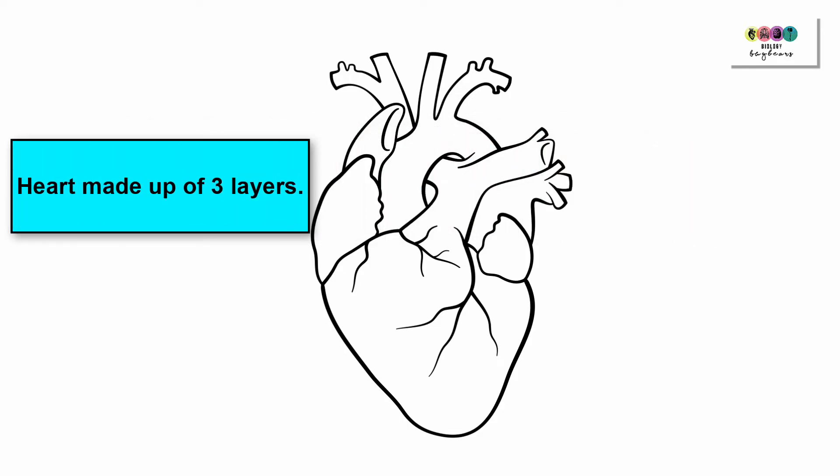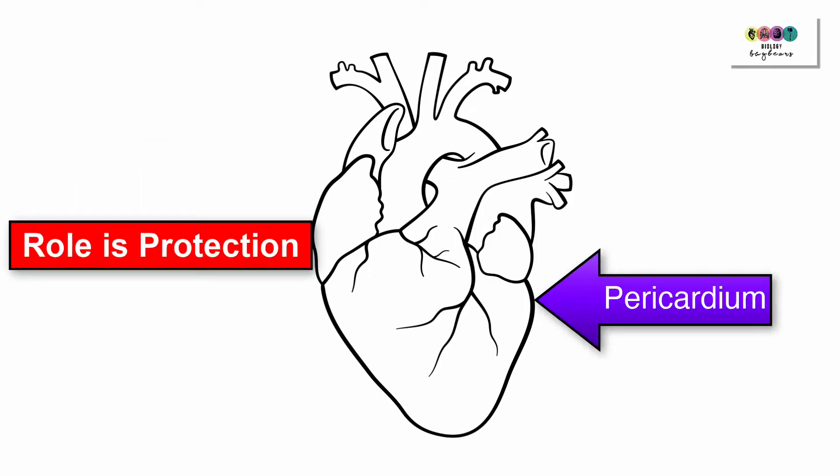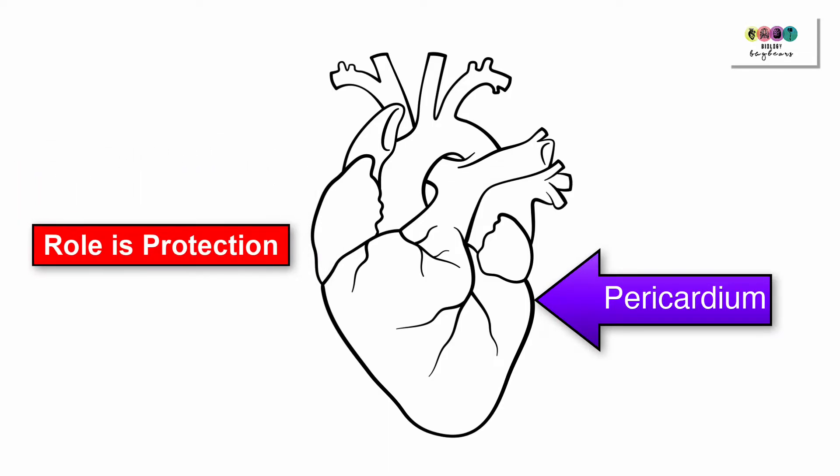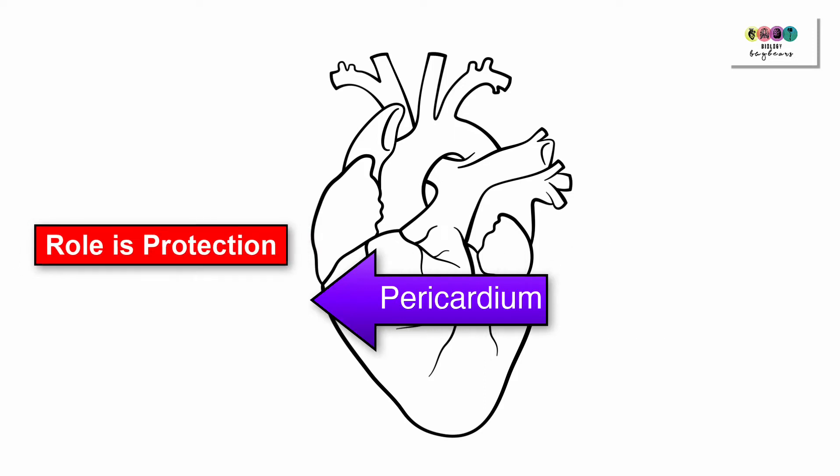The heart is made up of three layers. The outer layer which covers the external surfaces of the heart is called the pericardium. It's there for protection. In between both layers of the pericardium a fluid is secreted, and this allows for the friction-free movement of the heart.